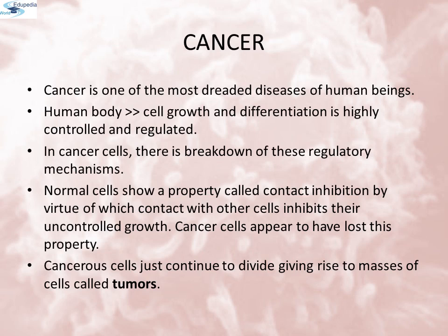In cancer cells, there is breakdown of these regulatory mechanisms. Normal cells show a property called contact inhibition, by virtue of which contact with other cells inhibits their uncontrolled growth. Cancer cells appear to have lost this property. As a result, cancerous cells just continue to divide, giving rise to masses of cells called tumors.